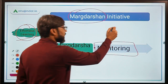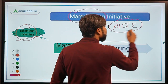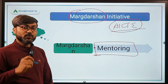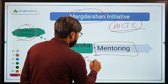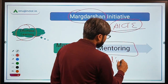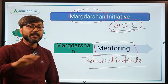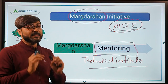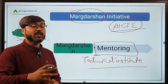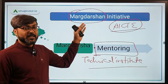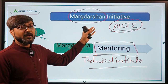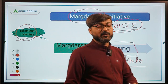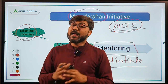This scheme is of AICTE, and AICTE deals with institutes that provide technical education. The basic objective of this scheme is to provide mentorship to institutes which are providing technical education, so that technical education can be improved as a whole.